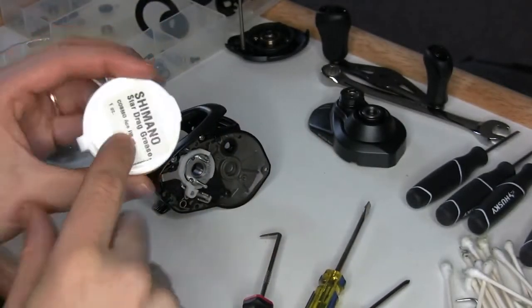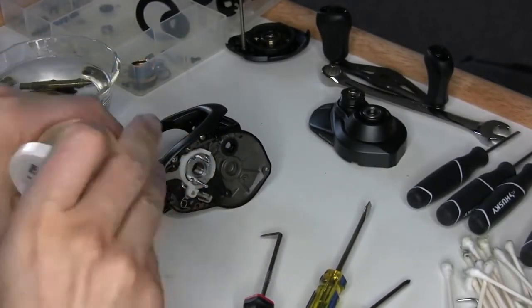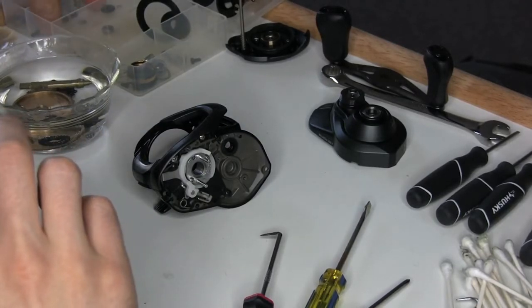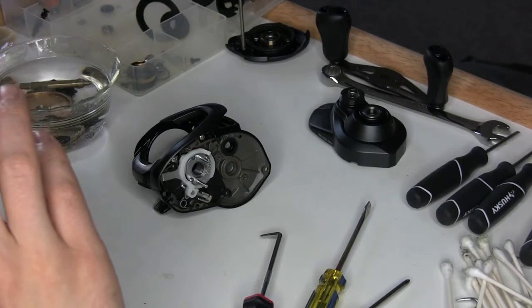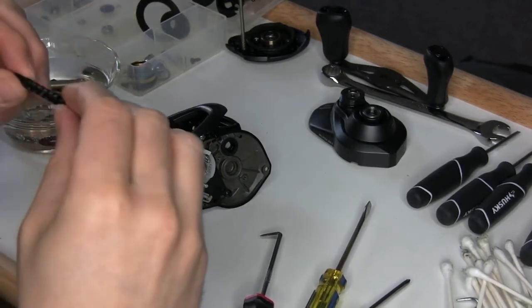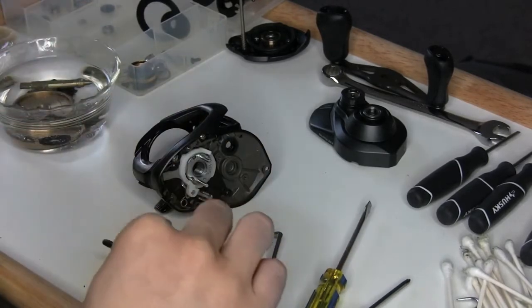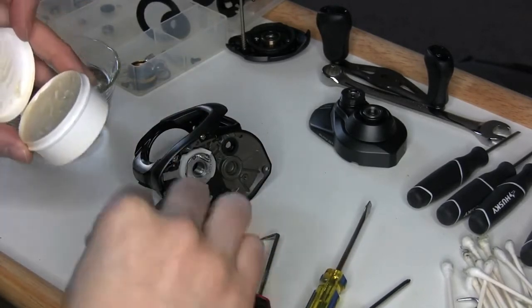So I do want to put some fresh grease, just a little bit of this drag grease, onto my worm gear. And I don't need a lot. You just barely want a little bit on there, and that's just to keep the metal from metal contact being an issue.